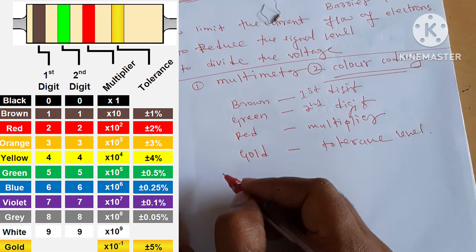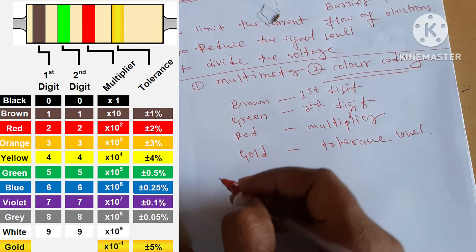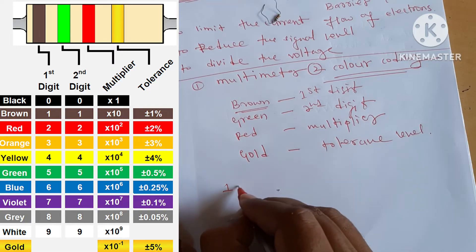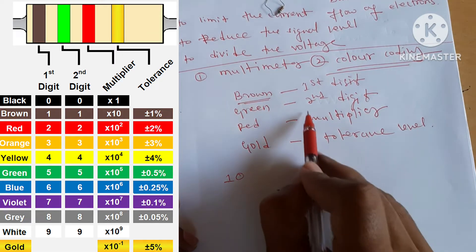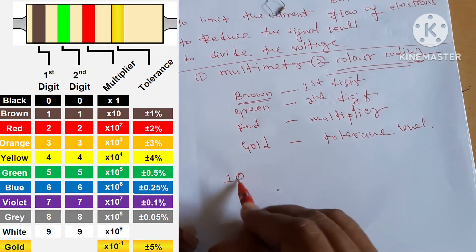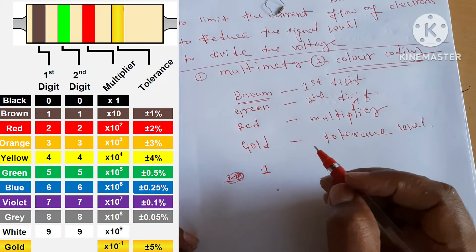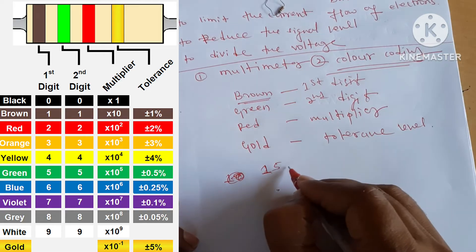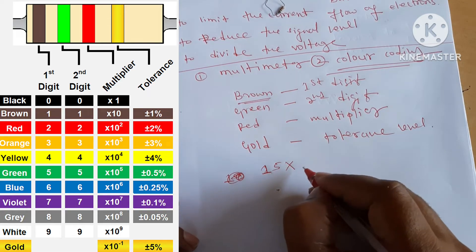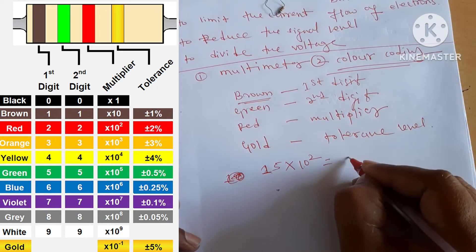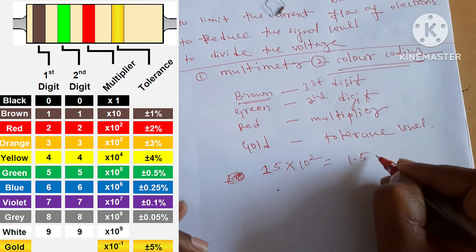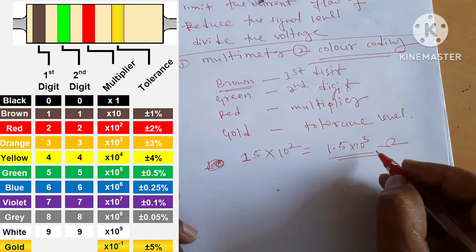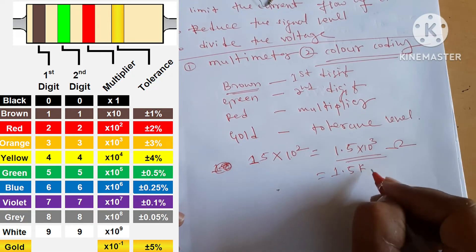The mnemonic is: BB Roy of Great Britain has a very good wife. Brown is digit 1, Black is 0, Red is 2, Orange is 3, and Green is 5. So for this resistor: first band brown is 1, second band green is 5, multiplier red is 10 raised to 2. That gives 15 × 10² = 1.5 × 10³, which is 1.5 kilo-ohm resistance.